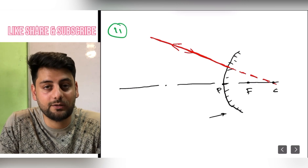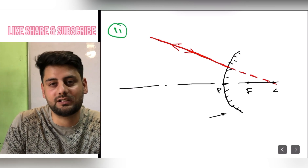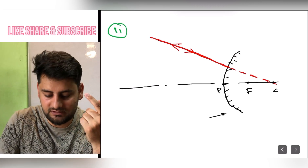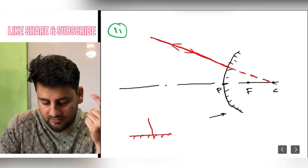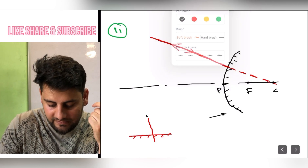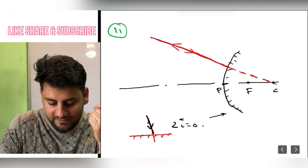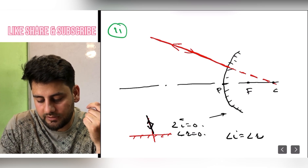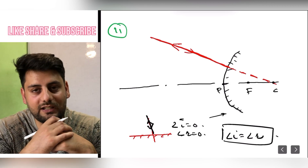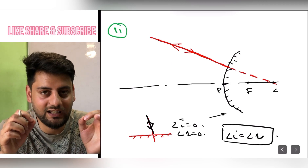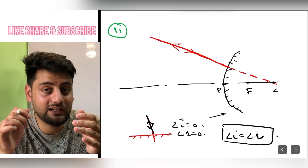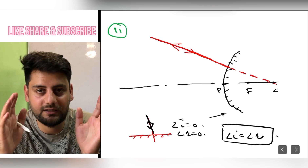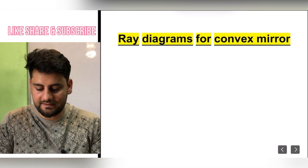Because at that point, the ray strikes the mirror exactly where the normal is. So the angle of incidence becomes zero. If the angle of incidence is zero, the reflected ray also goes along the same path, because angle of incidence equals angle of reflection according to the laws of reflection. So if a ray appears to be going through the center of curvature, after reflection it exactly follows the same path back.